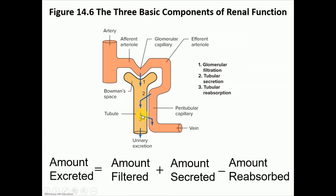The third process is reabsorption. Things that have been filtered into the filtrate but the body still needs — like glucose, amino acids, and sodium — are reabsorbed back into the blood. Tubular reabsorption is the passage of important substances from the tubules into the peritubular capillaries. Whatever remains after filtration plus secretion minus reabsorption is what is eventually excreted as urine.